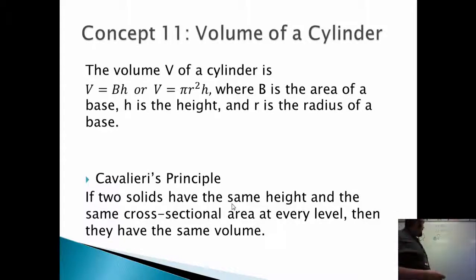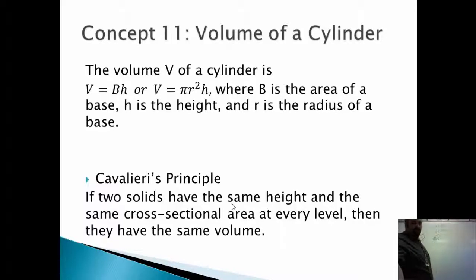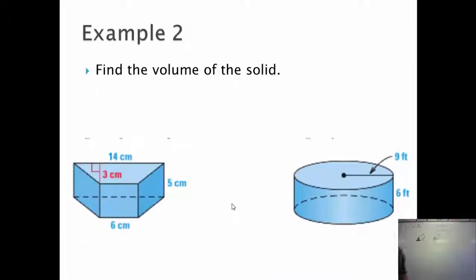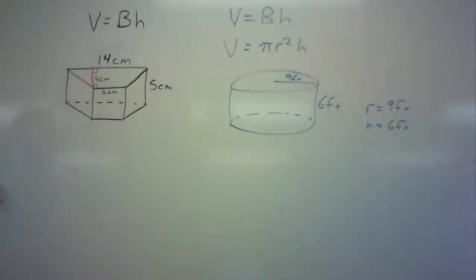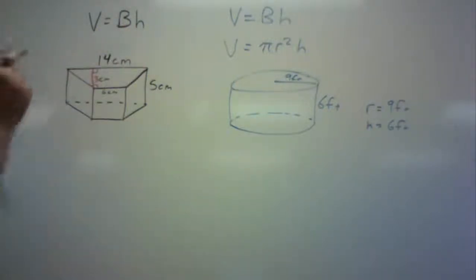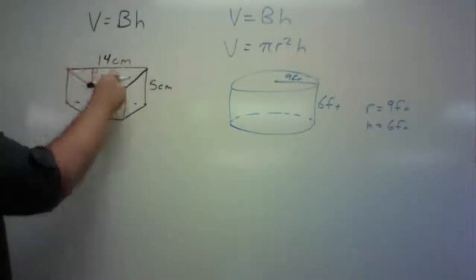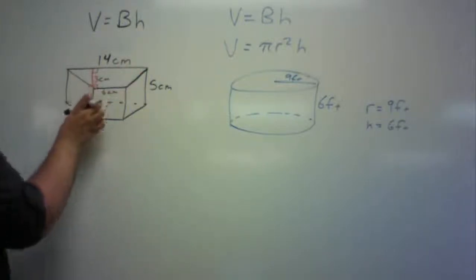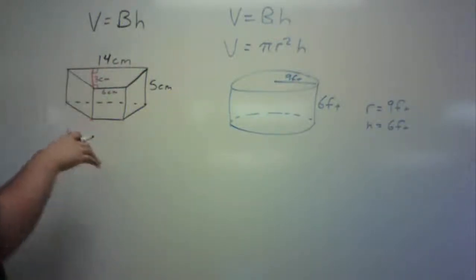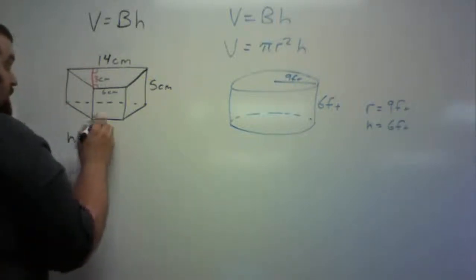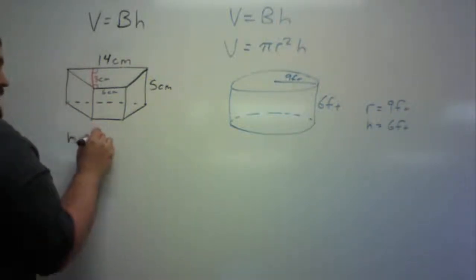Alright, so we know how to find the volume of a prism and a cylinder. Let's do a few examples. Find the volume of the solid. I look at these two shapes — we'll deal with the one on the left first. The volume equation is base area times the height. I know the height is 5 centimeters, because the trapezoid up here and the trapezoid down here are connected by quadrilaterals, so those two are the bases and they are parallel to each other.